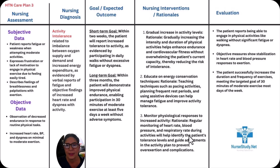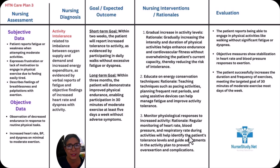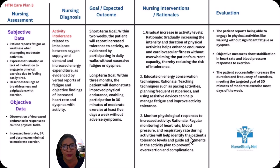The subjective data: the patient reports fatigue and weakness when attempting moderate activities, expresses frustration or lack of motivation to engage in physical exercise due to feeling easily tired, and describes feelings of breathlessness and palpitations on exertion. The objective data includes observation of decreased endurance in response to routine physical tasks, and increased heart rate, blood pressure, and dyspnea on minimal to moderate exertion. The nursing diagnosis is: activity intolerance related to imbalance between oxygen supply and demand and increased energy expenditure, as evidenced by verbal reports of fatigue, objective findings of increased heart rate, and dyspnea with activity.